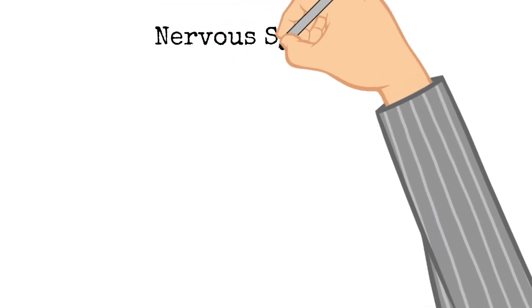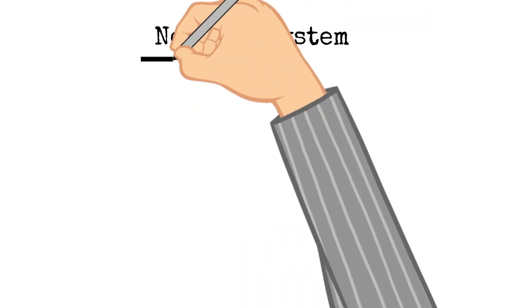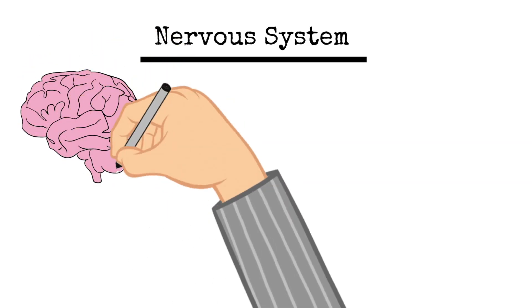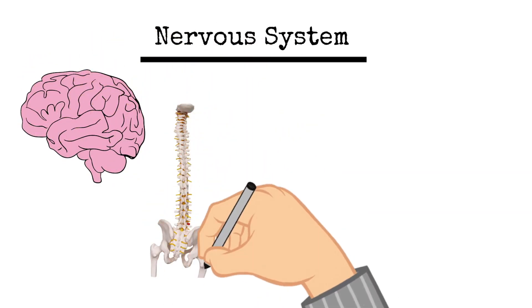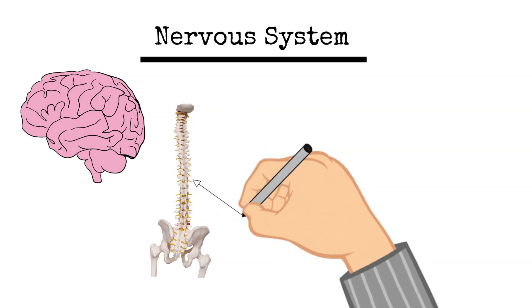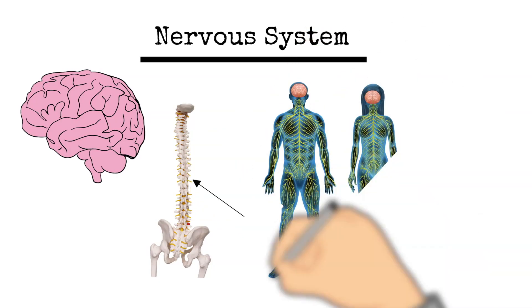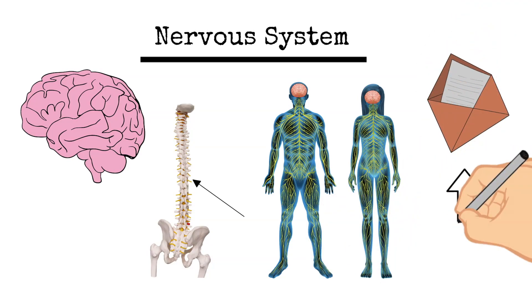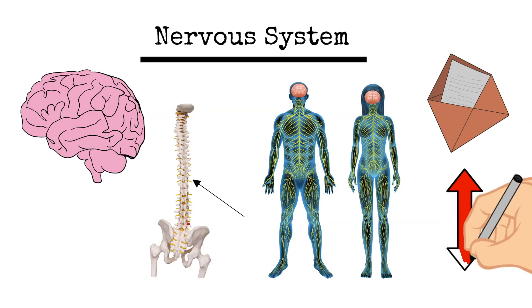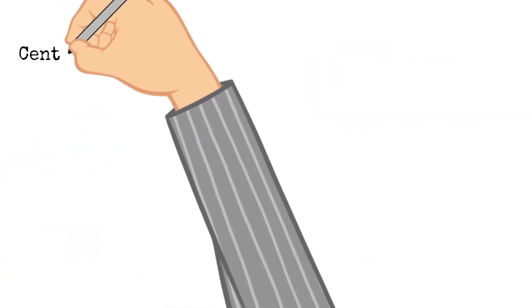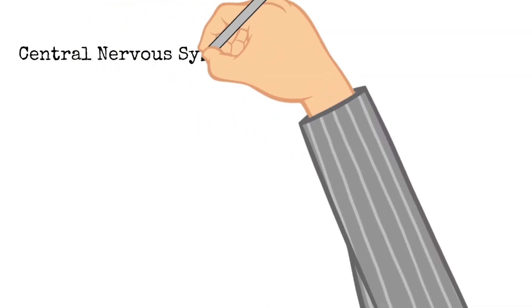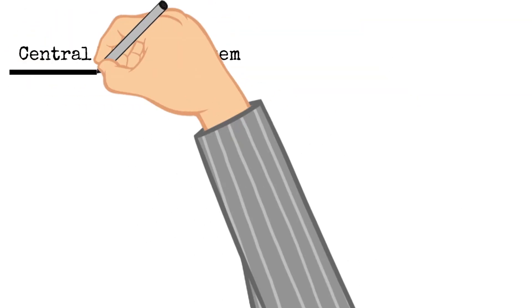The nervous system in our body has three parts, and these three parts are the brain, the spinal cord, and a complex network of nerves. This system works together and sends messages back and forth between the brain and the body.